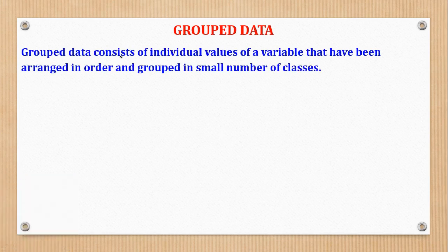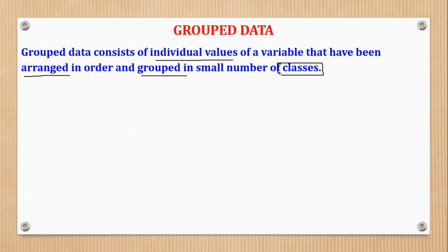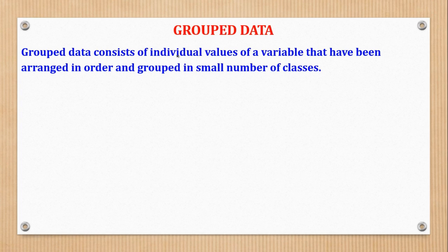Grouped Data consists of individual values of a variable that have been arranged in order and grouped in a small number of classes. In Senior 2, you covered ungrouped data and now we shall cover grouped data. We are going to start by listing the formulas that will be used in this video, and after that we shall go to the examples to see how the formulas can be applied.